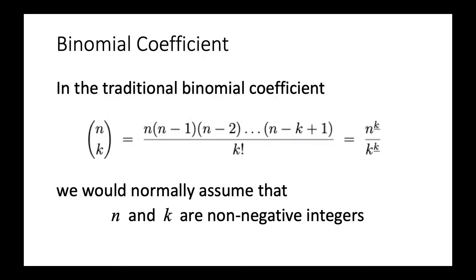Today's topic is about binomial coefficients. Let us recall: in the traditional binomial coefficients, we have n choose k, which represents the number of ways to select k items out of n items. It turns out we can compute its value as n times n minus 1 up to n minus k plus 1, divided by k factorial. We use the notation n to the power k falling — this is the falling power — to represent the numerator, and k factorial can be written as k to the power k falling.